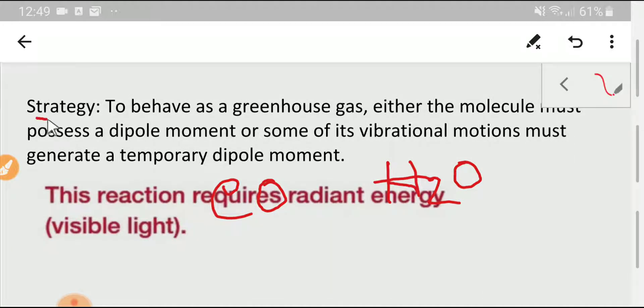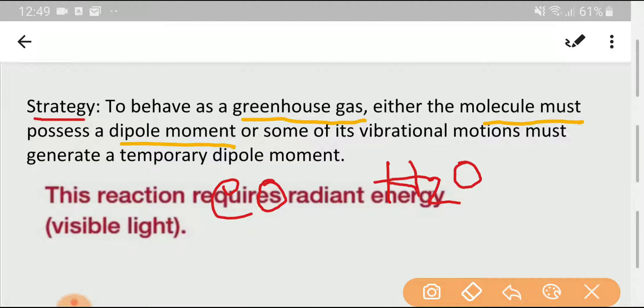We have to look at this strategy. To behave as a greenhouse gas, either the molecule must possess a dipole moment, or some of its vibrational motion must generate a temporary dipole moment.